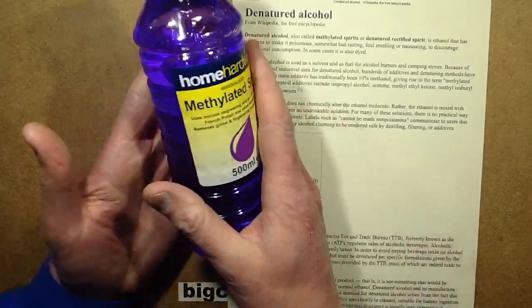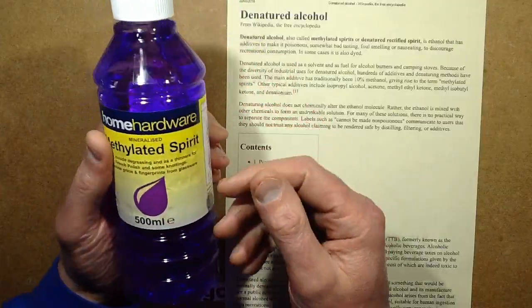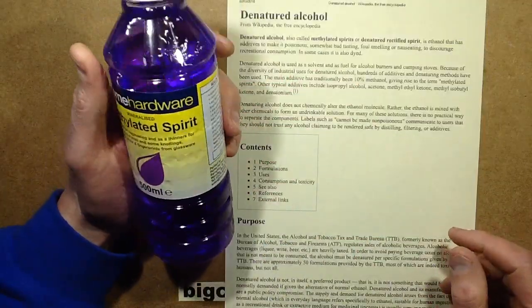However, the main thing is that it's typically around about 90% ethanol, 10% methanol, which is the toxic alcohol that makes you blind.